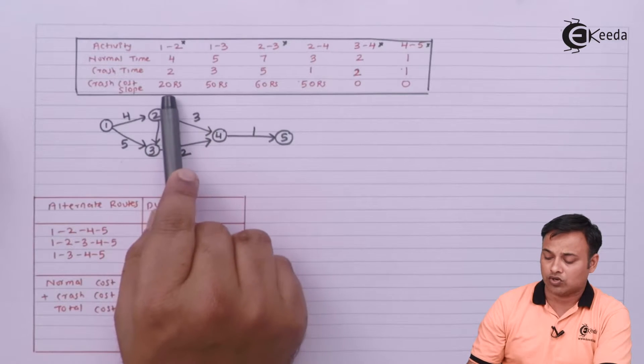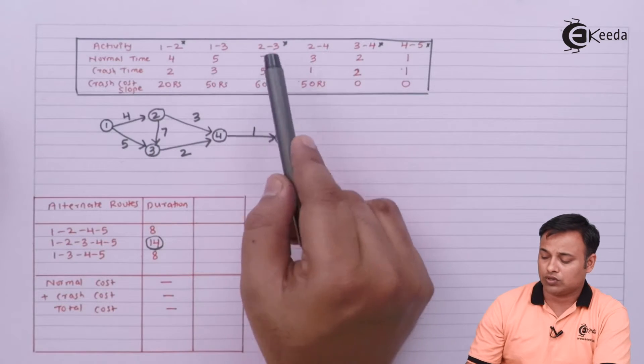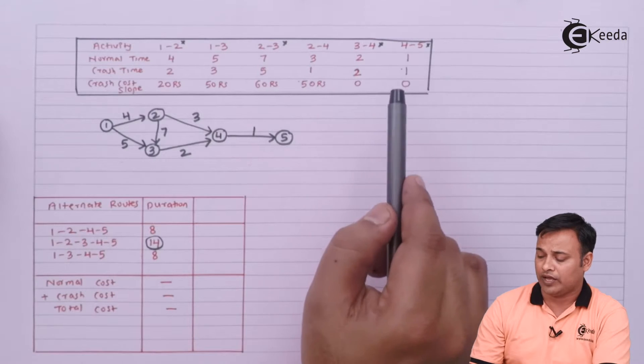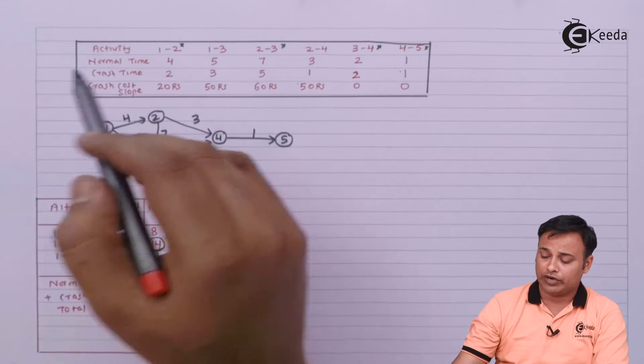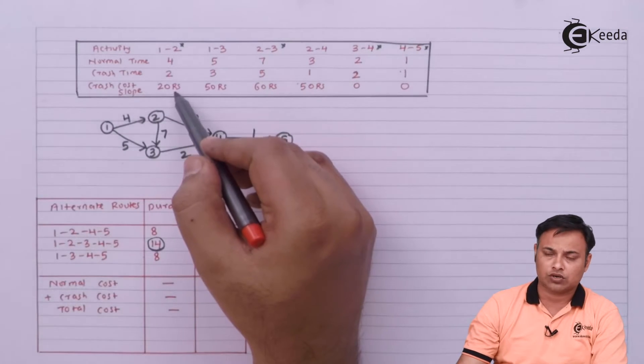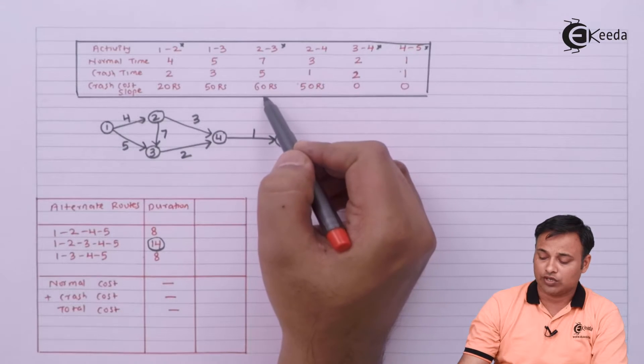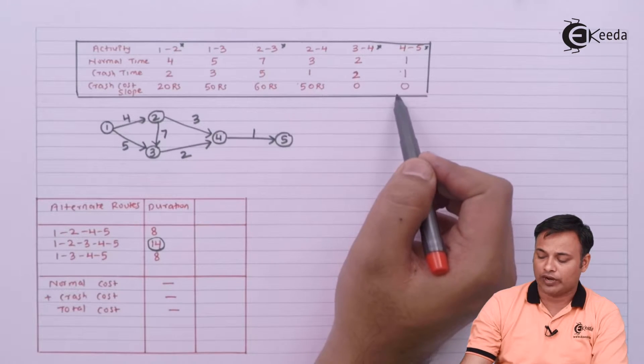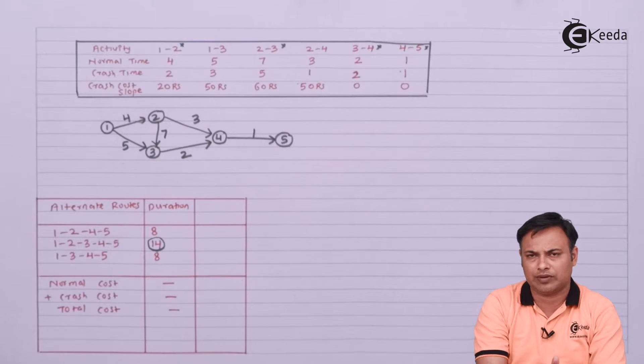Activity 1-2 has crash cost slope 20 rupees, 2-3 has 60 rupees, 3-4 is 0, and 4-5 is 0. So we have 1-2 with 20 rupees crash cost slope and 2-3 with 60 rupees. We can't do any crashing on 3-4 and 4-5 because crashing is not available there.